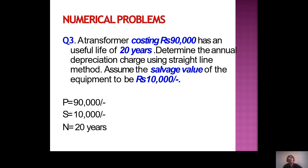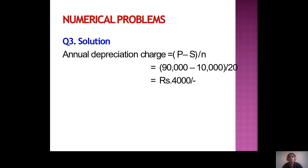Next problem: a transformer costing rupees 90,000 has a useful life of 20 years. Determine the annual depreciation charge using the straight line method, assuming salvage value is rupees 10,000. P = 90,000, S = 10,000, N = 20 years. Annual depreciation = (90,000 − 10,000) / 20 = rupees 4,000 per year.